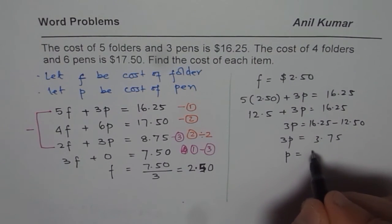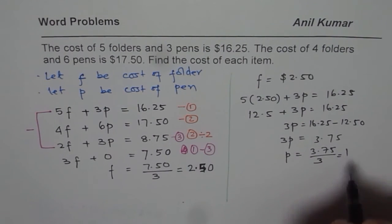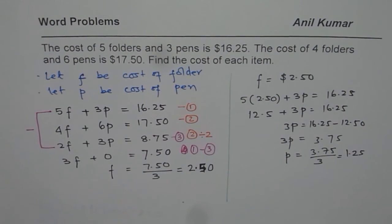So the cost of pen will be 3.75 divided by 3. So that gives you 1.25. So the cost of pen is 1.25.